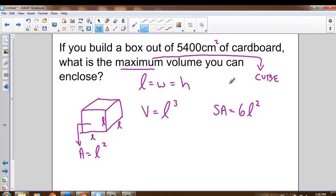So if we know that we have 5,400 centimeters squared of surface area to work with, we can solve for the length first by dividing 5,400 by 6, and you should get 900 equals L squared. And then we can take the square root of 900 to solve for L. And if you try that, you should get 30.